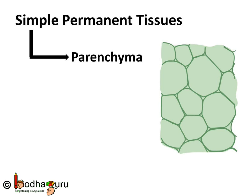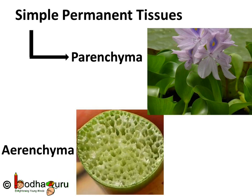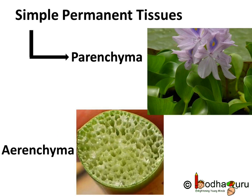This tissue does different tasks in different plants. Generally, it provides support to the plants and also stores food. But some parenchyma tissues contain chlorophyll, so they can prepare food — this type is also called chlorenchyma. In aquatic plants, large air cavities are present in the parenchyma to give them buoyancy and help them float, and such parenchyma tissues are called aerenchyma tissues.